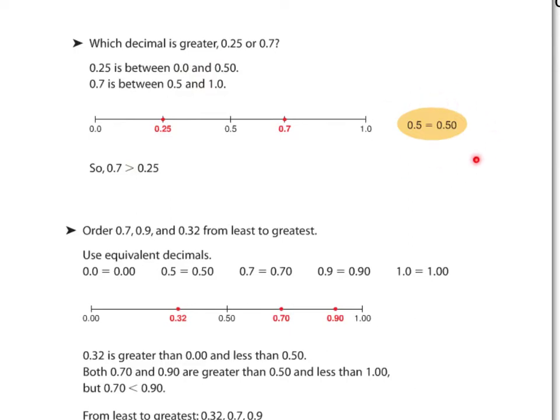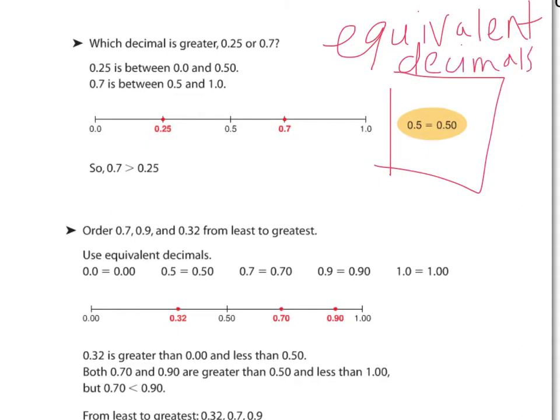The other thing we can do is make them into equivalent decimals. And this I personally find to be the most effective. Equivalent decimals all that means is that you are adding a 0 to the end of your number, and then you're comparing them exactly the same.